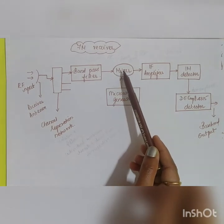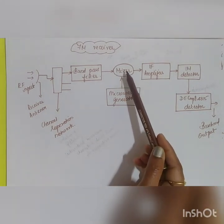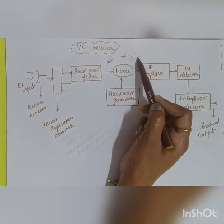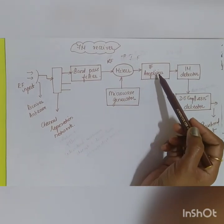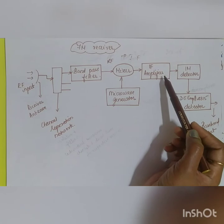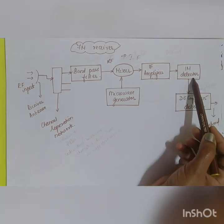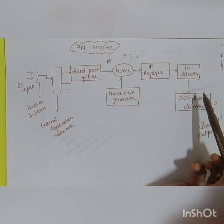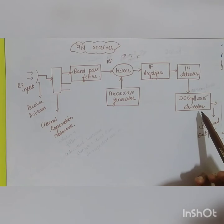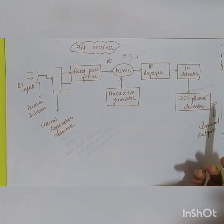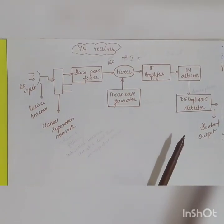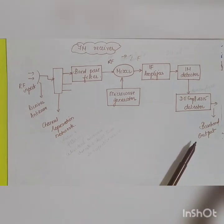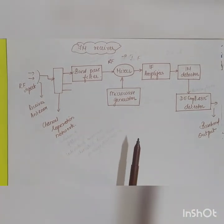After band limiting through the bandpass filter, the signal goes to the mixer and microwave generator for down-conversion: the RF signal is converted into an IF signal. This IF signal is then amplified by the IF amplifier, which along with the FM detector acts as the demodulator. The demodulator separates the signal and passes it to the de-emphasis circuit — the opposite of the pre-emphasis circuit — where the original baseband signal is recovered as the output.